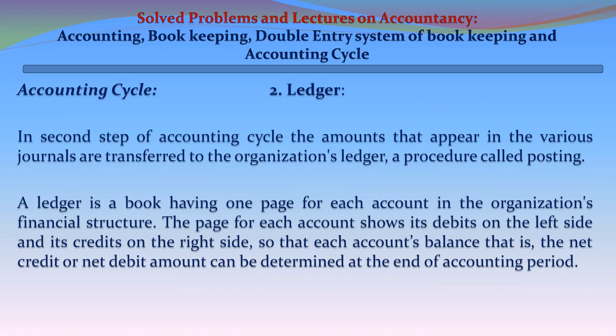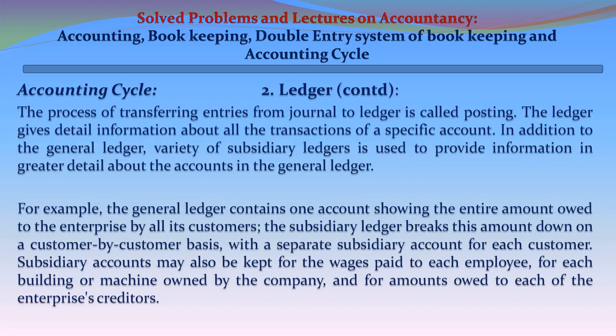Step 2 - Ledger: The amounts that appear in the various journals are transferred to the organization's ledger in a procedure called posting. A ledger is a book having one page for each account in the organization's financial structure. Each page shows its debits on the left side and credits on the right side, so that each account's balance — the net credit or net debit amount — can be determined at the end of the accounting period. The process of transferring entries from journal to ledger is called posting, and the ledger gives detailed information about all transactions of a specific account.